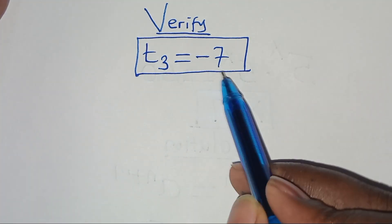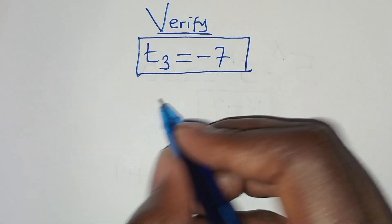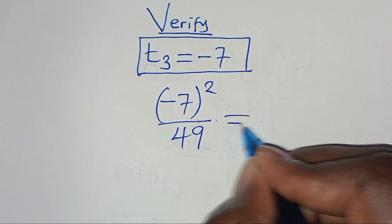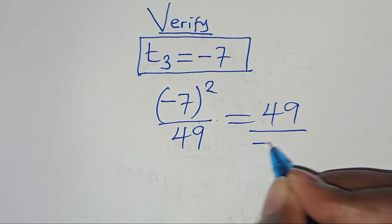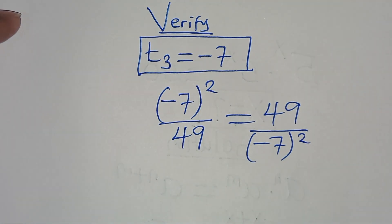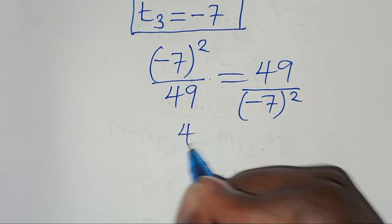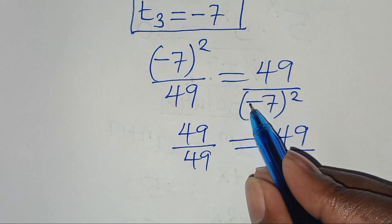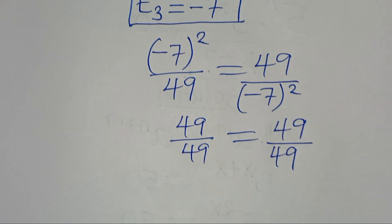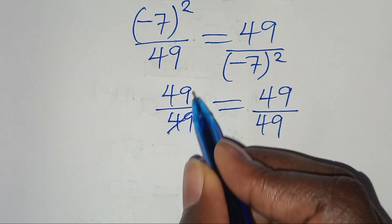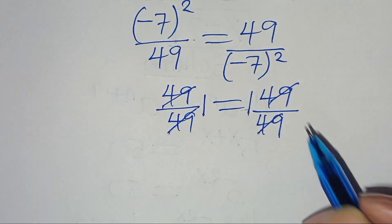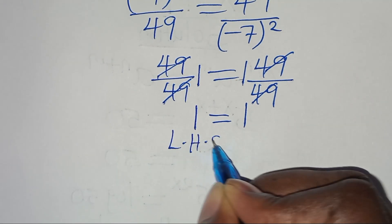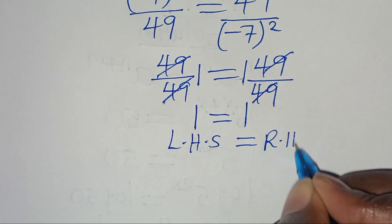For t₃ equals minus 7: we have (minus 7)² divided by 49 equals 49 divided by (minus 7)². Since (minus 7)² equals 49, this gives 49 over 49 equals 49 over 49, which simplifies to 1 equals 1. The left-hand side equals the right-hand side, confirming t₃ satisfies the equation.